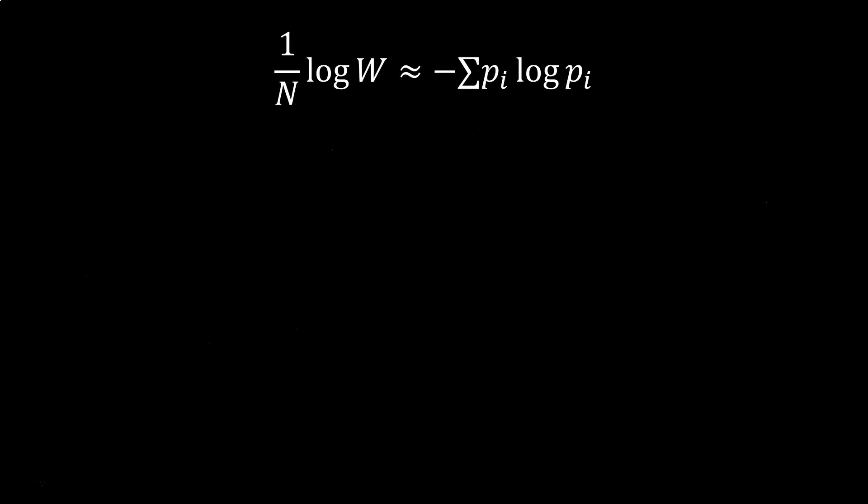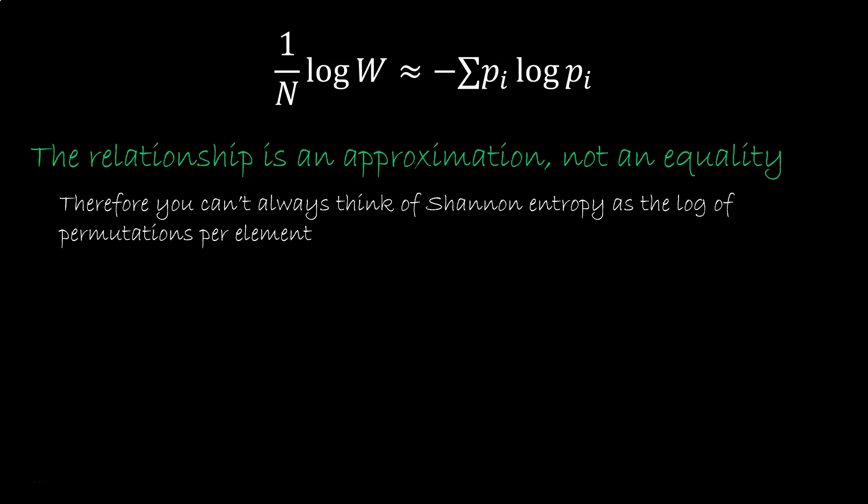A couple of things to note. The relationship is an approximation, not an equality, so you can't always think of the Shannon entropy as the log of permutation per element. It doesn't always work.